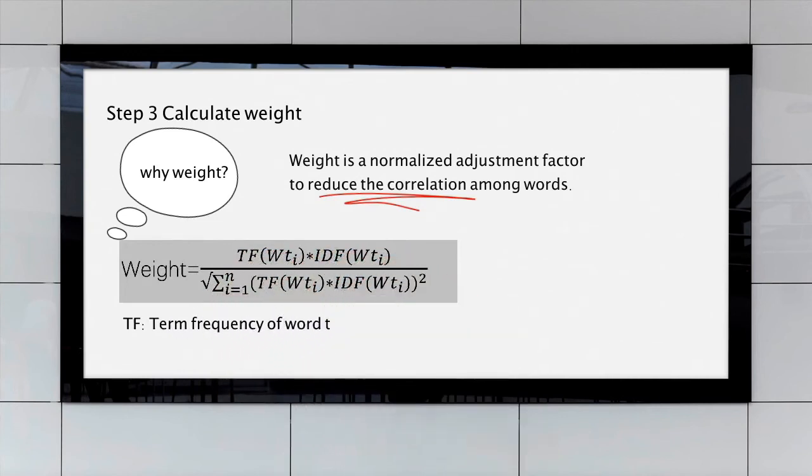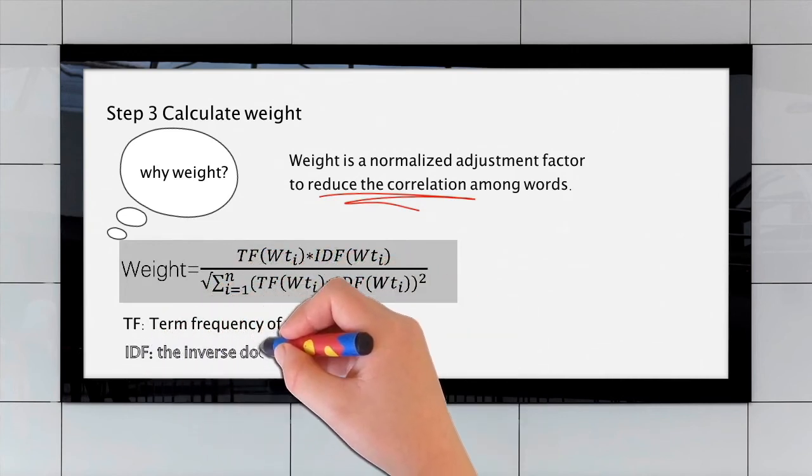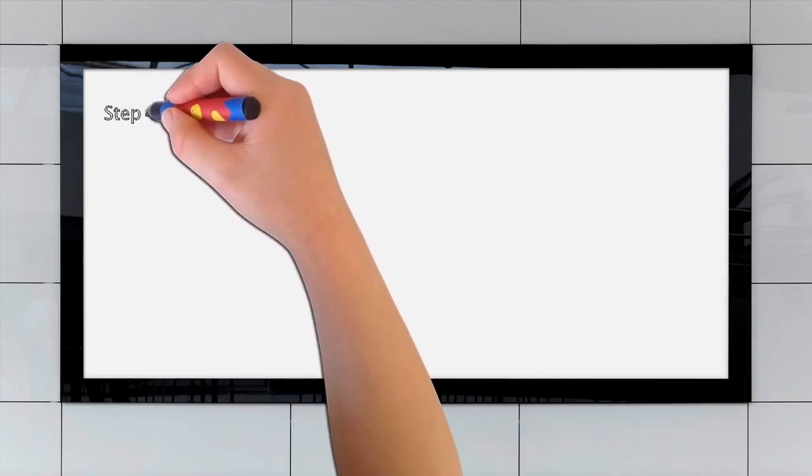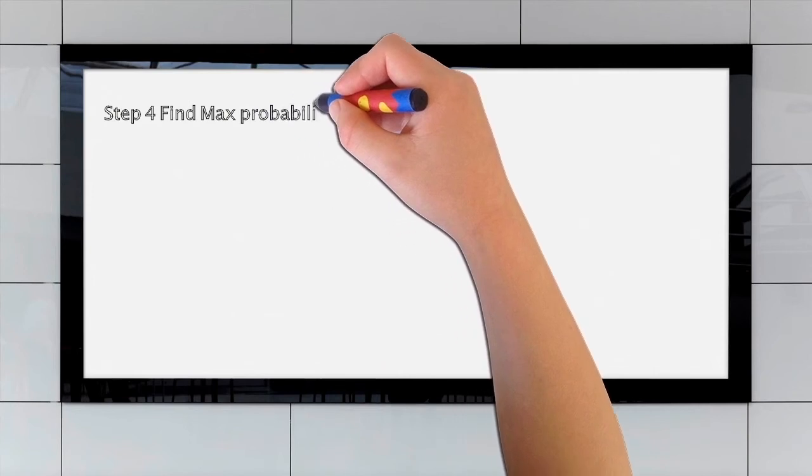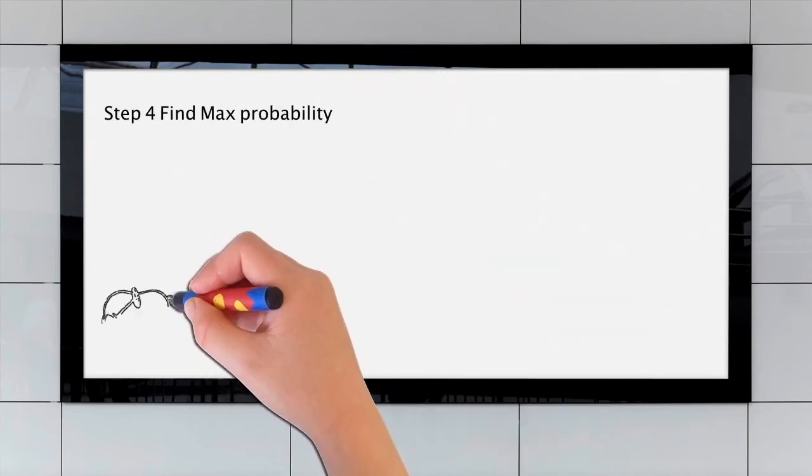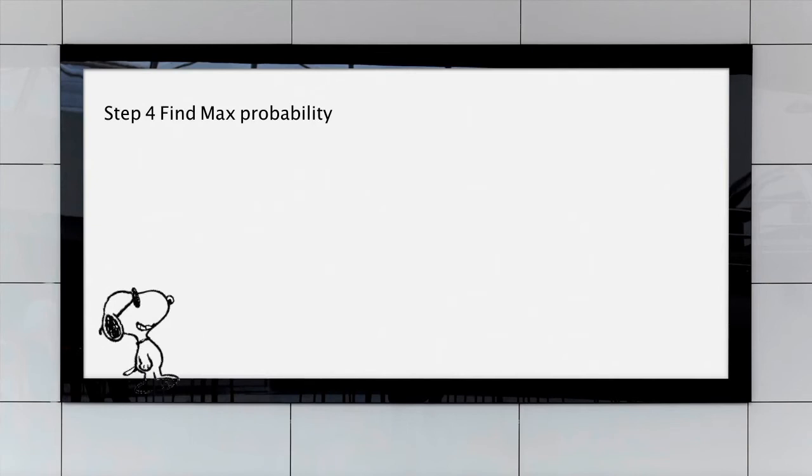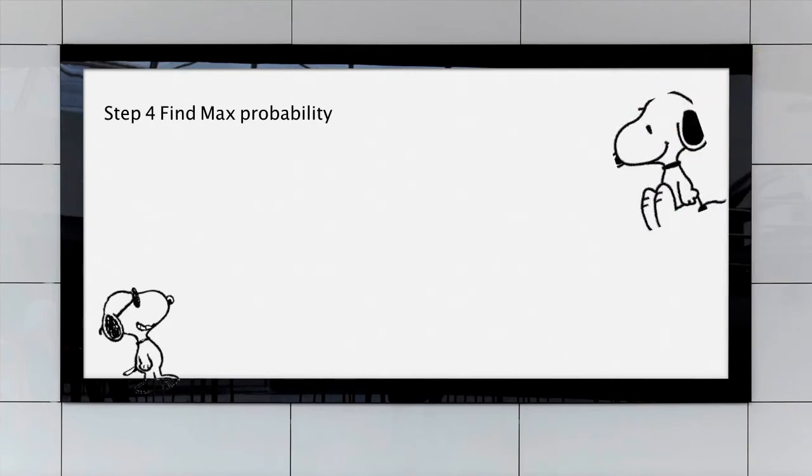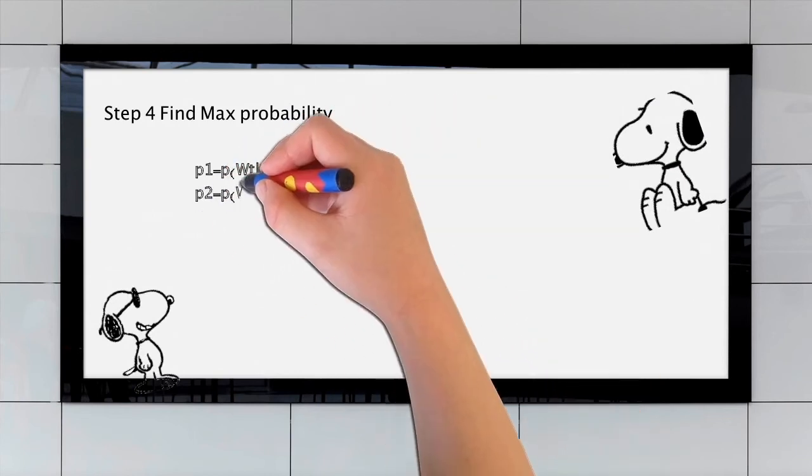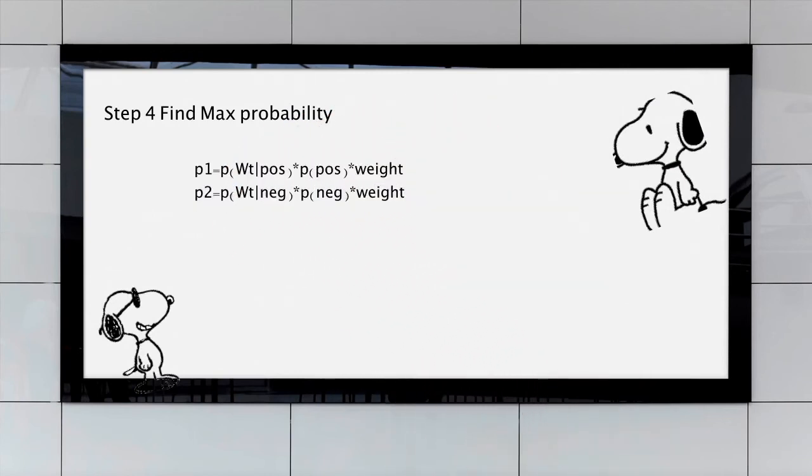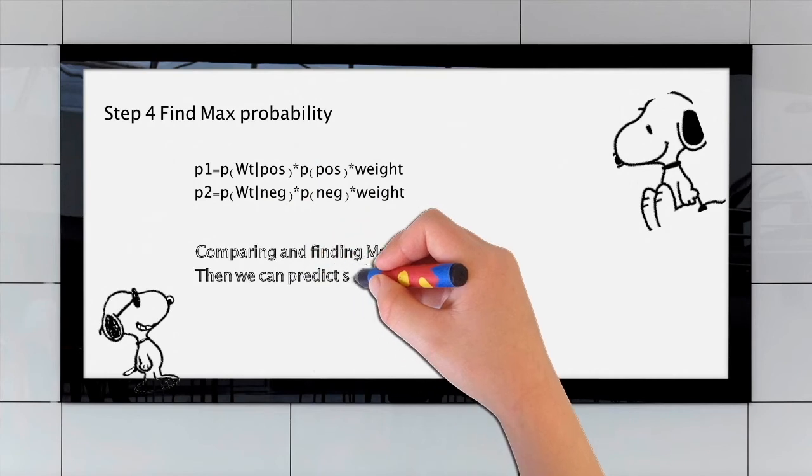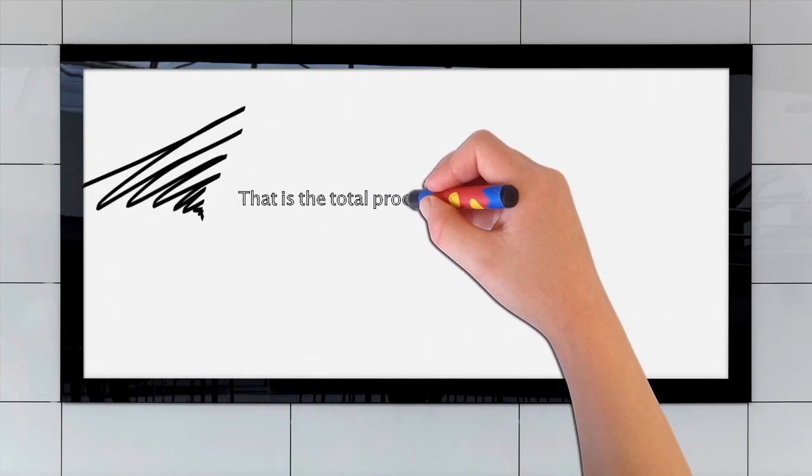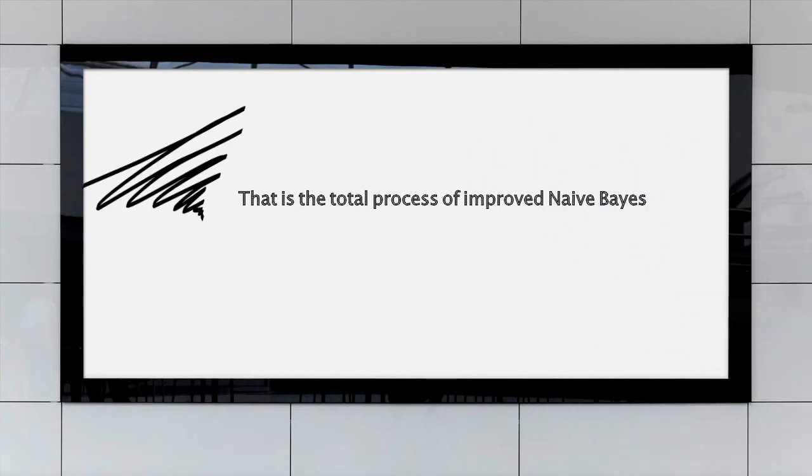TF refers to the term frequency and IDF refers to inverse document frequency. Step four, find the maximum probability. Firstly, we should calculate probability one and two. Then, compare the two probabilities to find the maximum one. Finally, we can predict sentiment based on the max probability. This is the total process of Improved Naive Bayes.